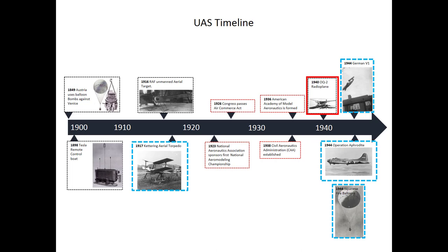The OQ-2 radio plane was the first mass-produced UAV or drone in the United States. A follow-on version, the OQ-3, became the most widely used target aircraft in U.S. service, with over 9,400 being built during World War II. The OQ-2 was a simple aircraft powered by a two-cylinder, two-cycle piston engine providing six horsepower and driving two counter-rotating propellers. Launching was by catapult only, and recovered by parachute should the aircraft survive the target practice.